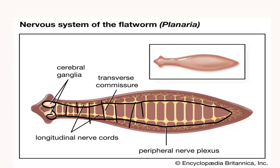The whole animal is sensitized to nerve stimulation from the outside, as the nervous system is spread throughout the body of the organism. This evolution of cephalization in Platyhelminthes has made them superior animals compared to the invertebrate phyla studied earlier. Evolution leading to the formation of a brain leads to greater survival, as the organism can respond to all environmental stimuli, and cephalization helps the animal survive better in the environment.